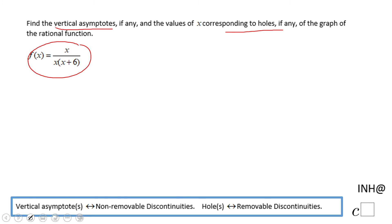For finding the vertical asymptotes or the holes, we're looking for discontinuities—removable or non-removable. And how do you find the discontinuity? You take the denominator and make it equal to zero. In this case, we already have the factor form.